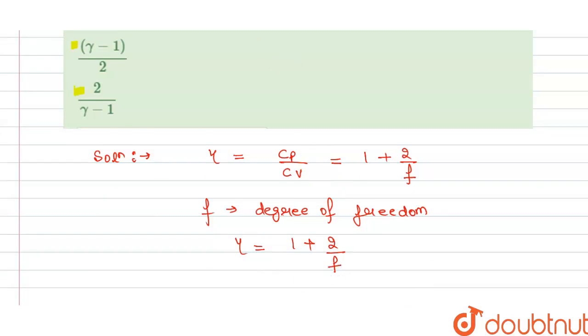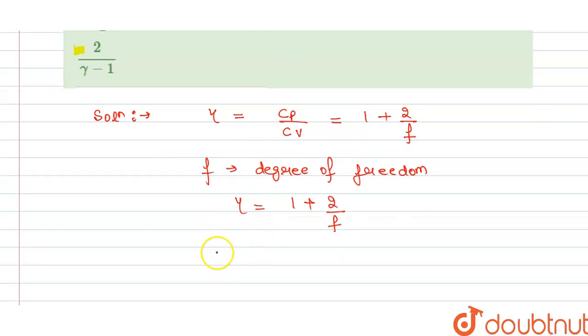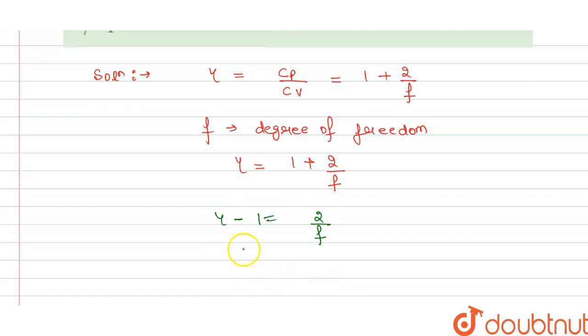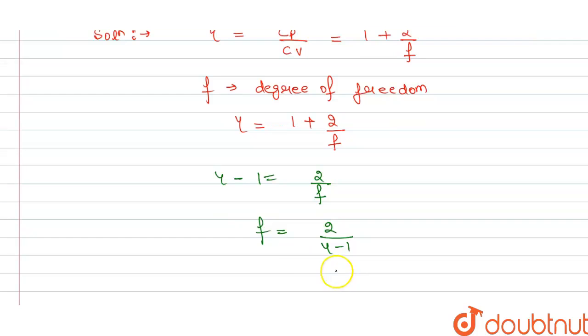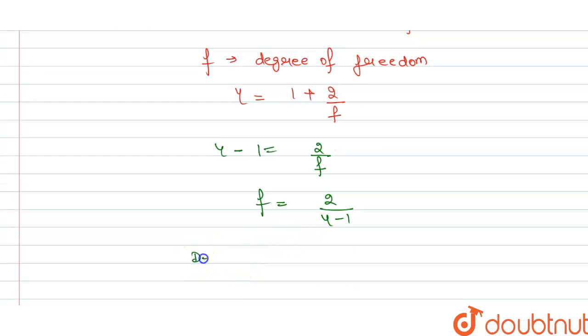From this we can say that gamma minus 1 equals 2 divided by degree of freedom. And from this we can say that degree of freedom is 2 divided by gamma minus 1. So we can say that our degree of freedom is 2 divided by gamma minus 1.